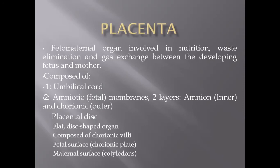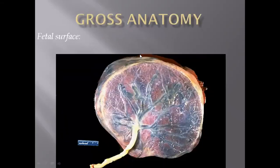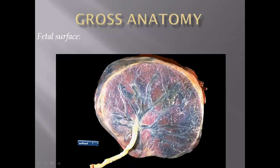One surface is the fetal surface, also called the chorionic plate, and the other is the maternal surface, which contains the cotyledons. This is the normal gross specimen of the placenta — this side represents the fetal surface, and the opposite aspect represents the maternal side. There is a white-tan rope-like structure known as the umbilical cord, and in this picture we can see it is centrally attached, which is the normal anatomical position.